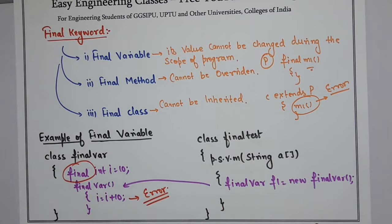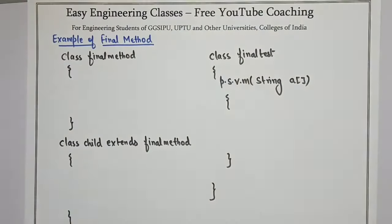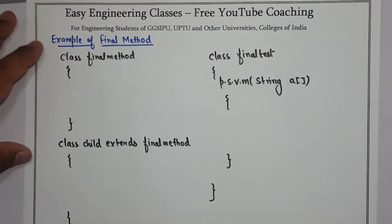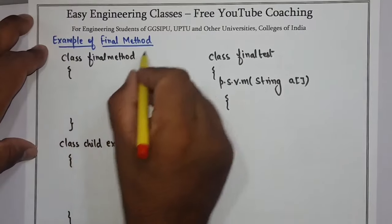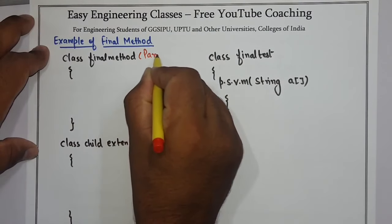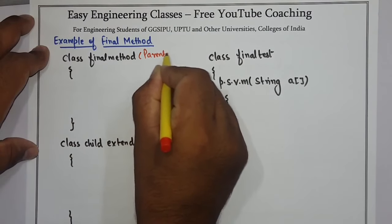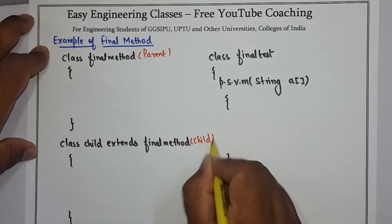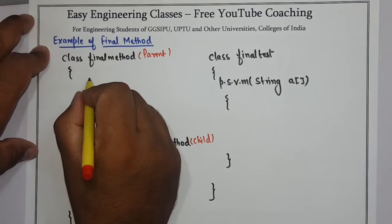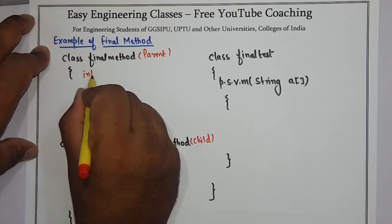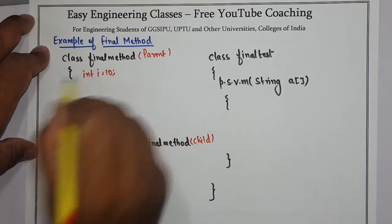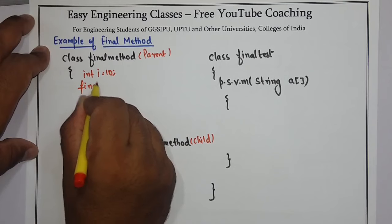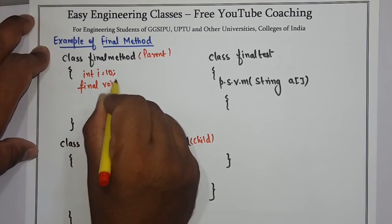You cannot change the value of a final variable — we will also implement this on the system shortly. Similarly, the second example is of a final method. This is a parent class and this is a child class. In the parent class, suppose I have a method declared as final — so: final void...